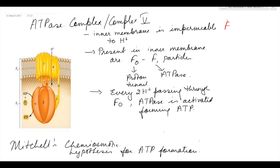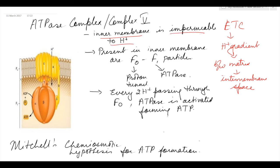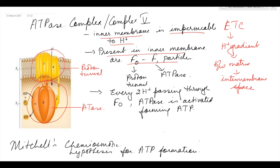Due to the electron transport chain, a proton gradient is created between the matrix and the intermembrane space. The inner membrane is impermeable to protons, so they cannot move back. Present in the inner membrane are F0F1 particles, where F0 is the proton tunnel and F1 shows ATPase activity. For every two protons passing through the proton tunnel, one ATP is formed. This is Mitchell's chemiosmotic hypothesis for the formation of ATP.